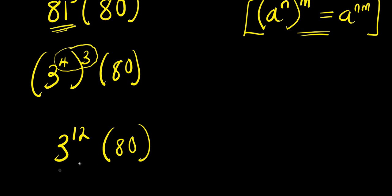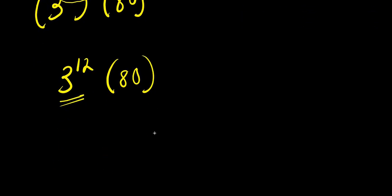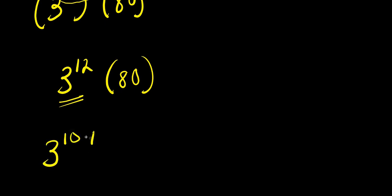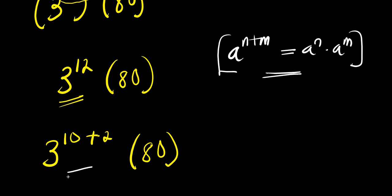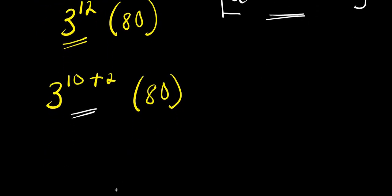So what then is the value of three to the power twelve? We are going to express three to the power twelve as three to the power ten plus two, times eighty. Applying the identity a to the power n plus n equals a to the power n times a to the power n, we get three to the power ten times three to the power two, times eighty.